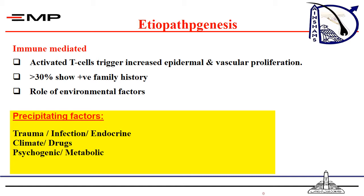Trauma is a well-known precipitating factor, and the disease occurs at areas of trauma — what is known as the Koebner phenomenon. Some pathogens, like streptococcal strains, will induce and aggravate the disease. Some endocrinal disturbances and hormones like estrogen can precipitate the disease. Sunlight and ultraviolet rays usually improve the skin condition, which is why patients improve in summer and worsen in winter. Some drugs are incriminated in aggravating the disease in genetically predisposed patients, and psychological stress and metabolic disturbances like hypocalcemia can also aggravate psoriasis.